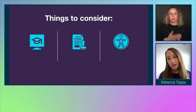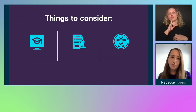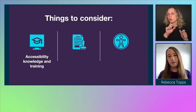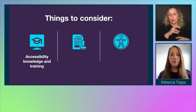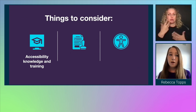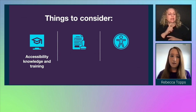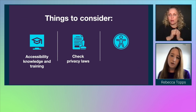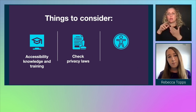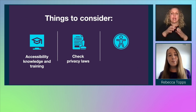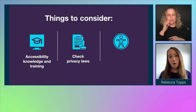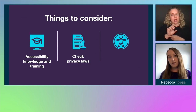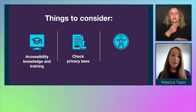Before you start to include accessibility in your research, consider the following. Think about your team and company accessibility knowledge and training — is there a way to provide in-house or external training that explains user needs and assistive technologies? Check your privacy laws and speak with your privacy or legal team before conducting any accessibility research. There's something called special category data that's good to understand. If you have a research operations team like we do at Atlassian, work with them on privacy, recruitment, and accessibility training.